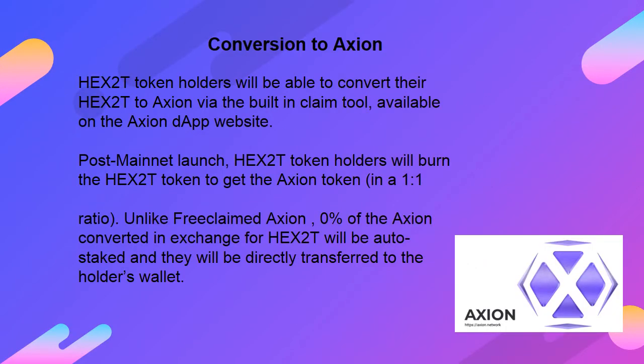Hex 2T token holders will be able to convert their Hex 2T to Axion via the built-in claim tool available on the Axion DApp website. Post mainnet launch, Hex 2T token holders will burn the Hex 2T token to get the Axion token in a 1-to-1 ratio. Unlike free claimed Axion, 0% of the Axion converted in exchange for Hex 2T will be auto-staked — they will be directly transferred to the holder's wallet.